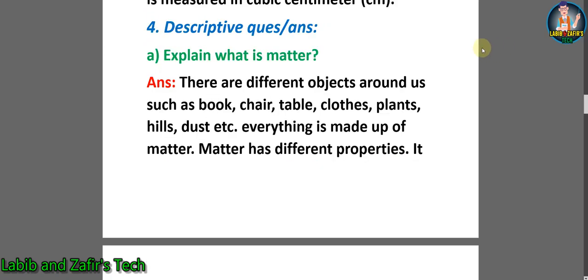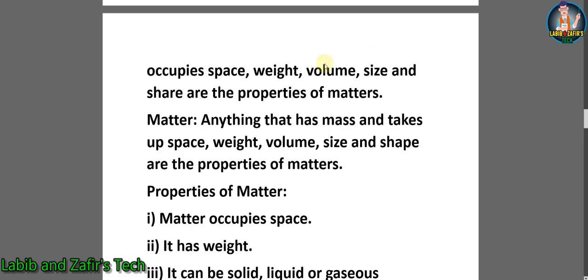Now let's go through some descriptive question answers. Question A: explain what is matter? Answer: there are different objects around us such as book, chair, table, clothes, plants, hills, dust, etc. Everything is made up of matter. Matter has different properties — it occupies space and has weight, volume, size, and shape.